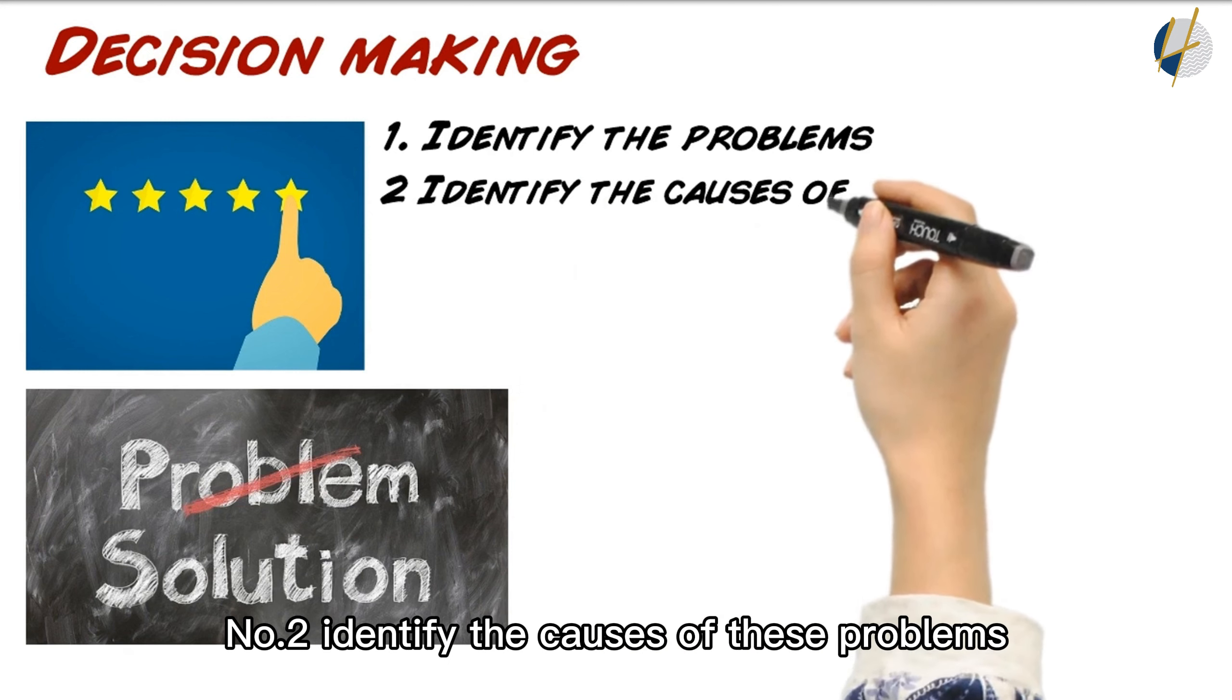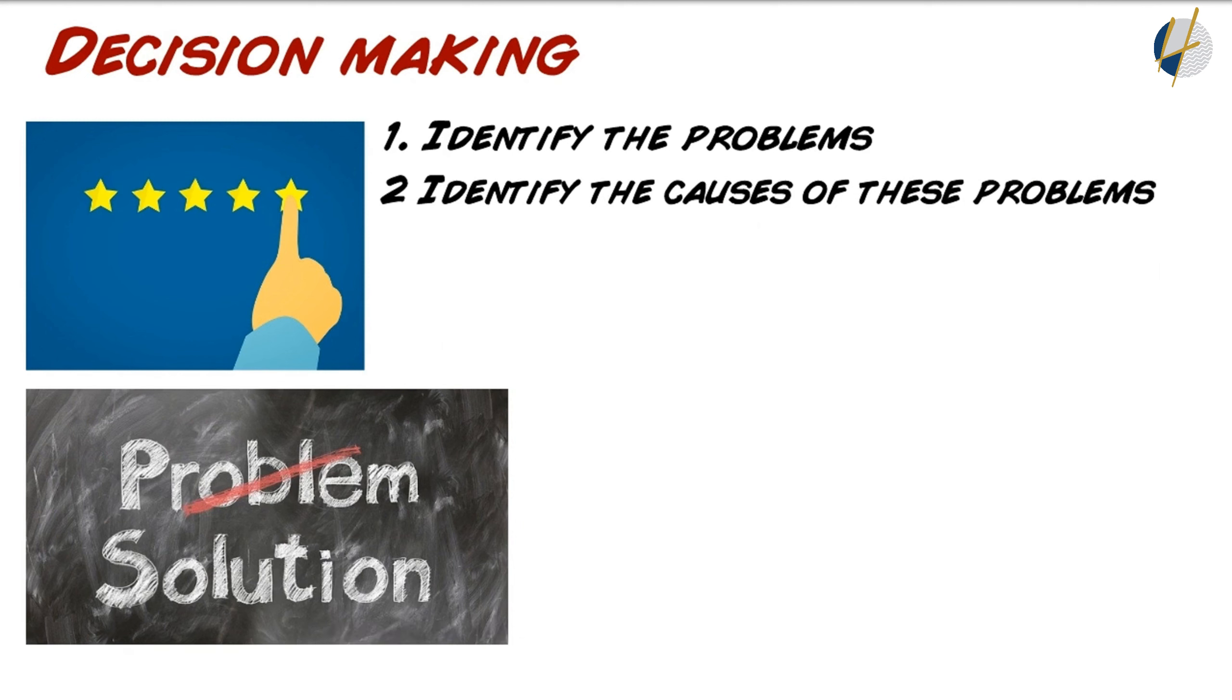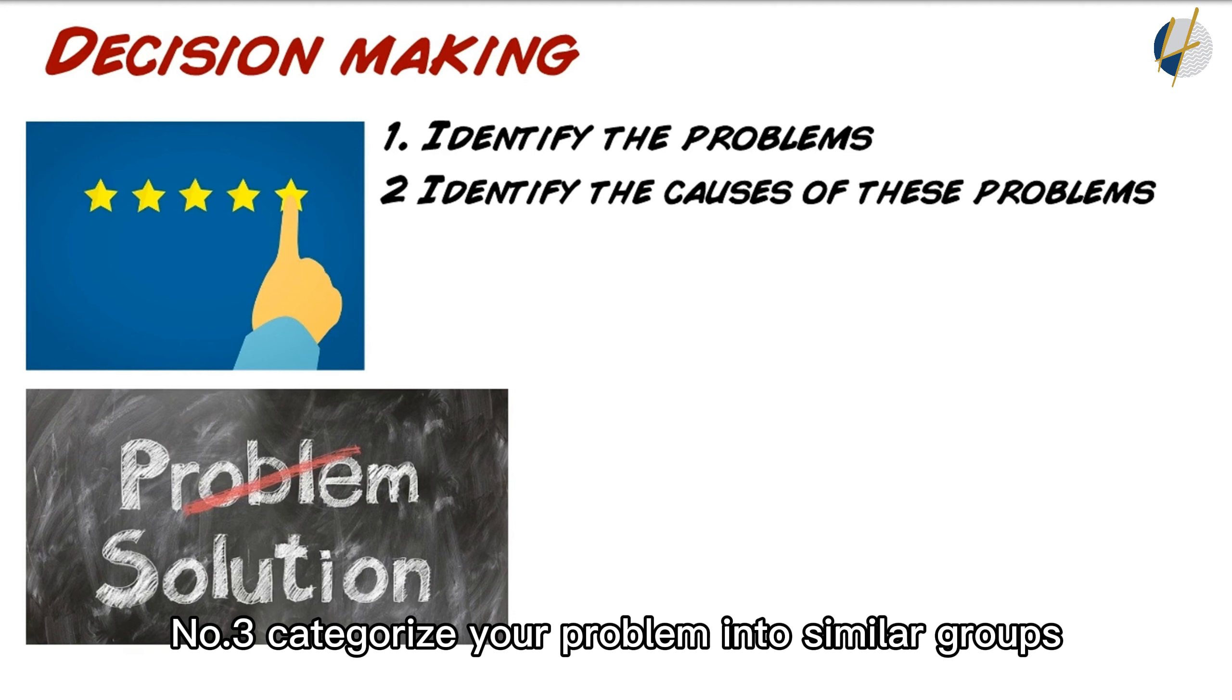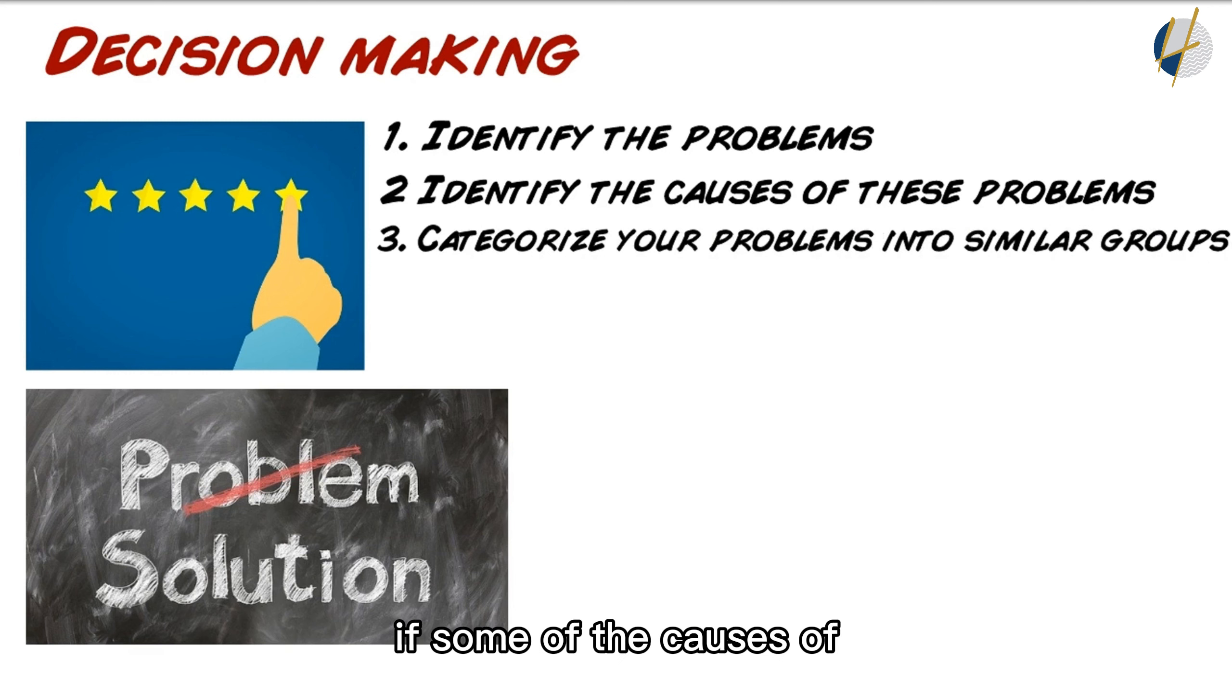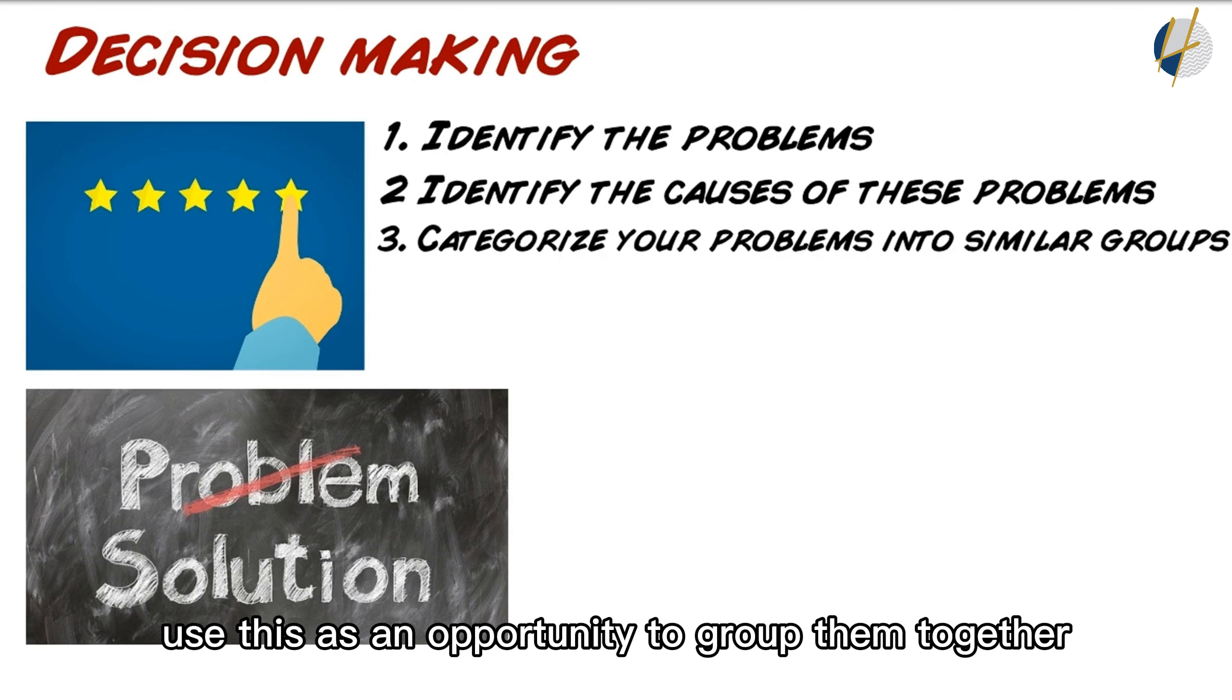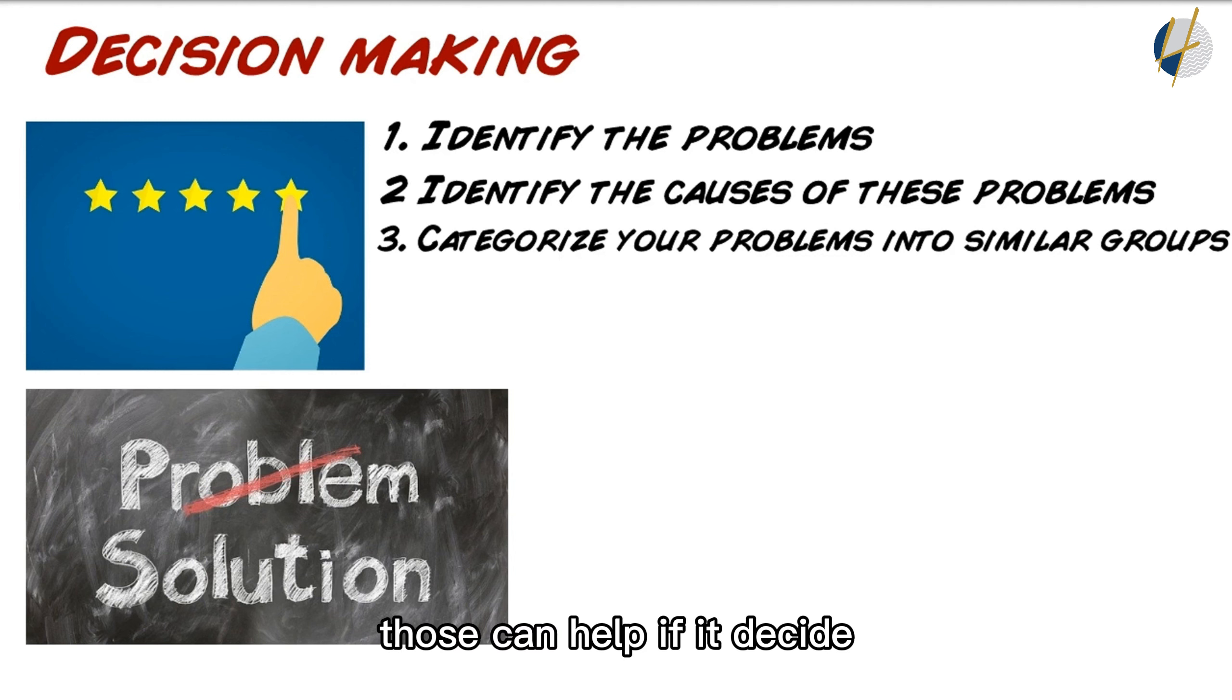Number two, identify the causes of these problems. Using a tool like the 5 Whys process, find all the causes of the problem that you are trying to solve. Number three, categorize your problems into similar groups. If some of the causes of the problems you are trying to solve can fall into similar categories, use this as an opportunity to group them together. This can help you decide if one solution can resolve multiple issues.